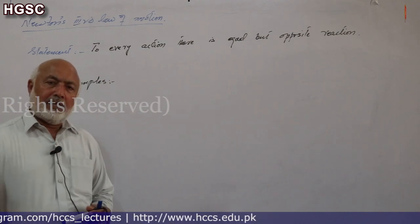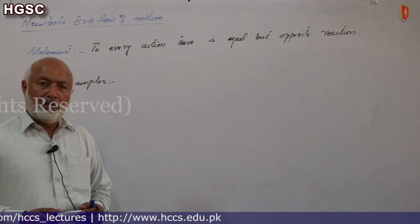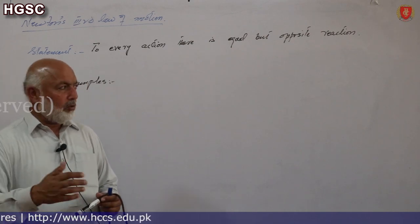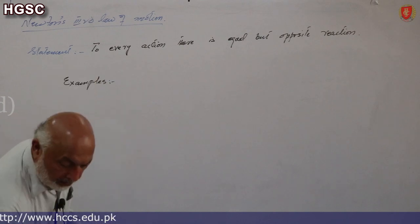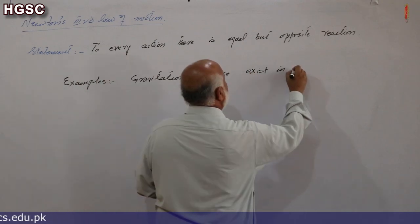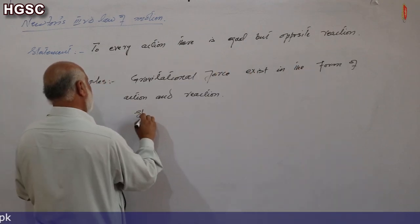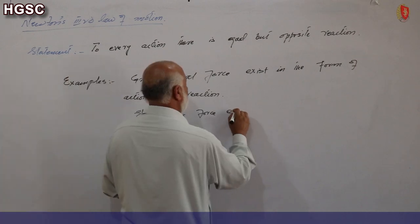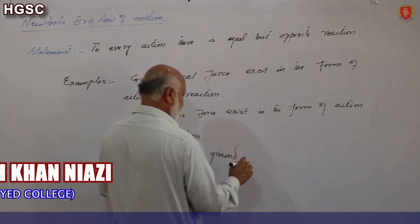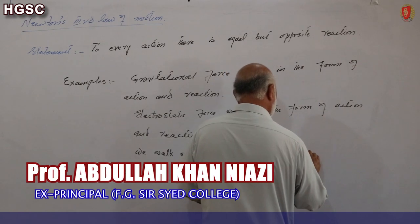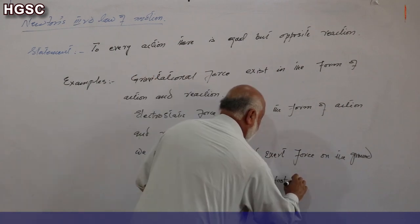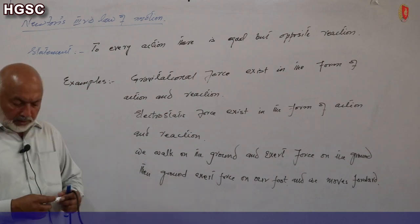Gravitational force exists in the form of action and reaction. Electrostatic force exists in the form of action and reaction. When we walk on the ground, we exert force on the ground, and then the ground exerts an equal but opposite force on our foot, and we move forward. There are many such examples of Newton's third law in daily life.